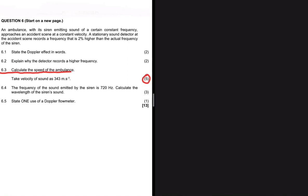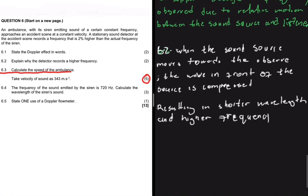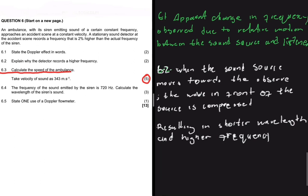Before we do that, let's go through 6.1 and 6.2 quickly. So 6.1 asks us to state the Doppler effect in words. It states that it is the apparent change in frequency observed due to relative motion between the sound source and the listener. That is as simple as it gets.